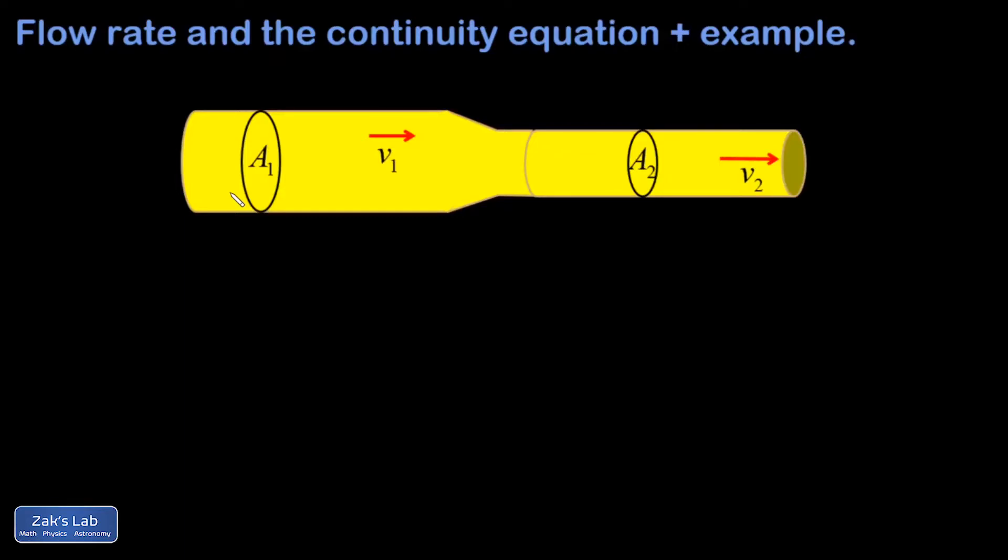In this video, we're looking at a liquid flowing through a pipe that has changing diameter, and we want to figure out how the speed of the liquid must change. The result of this calculation is called the continuity equation for fluid dynamics.